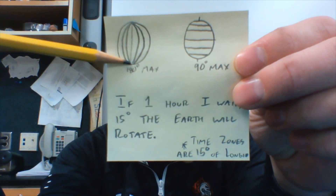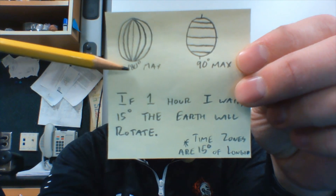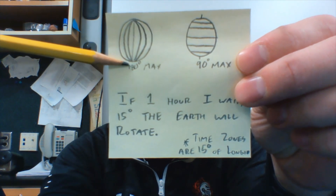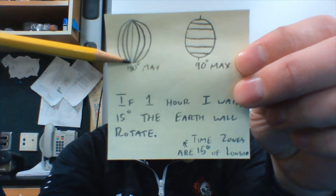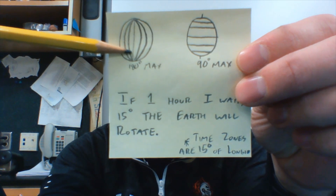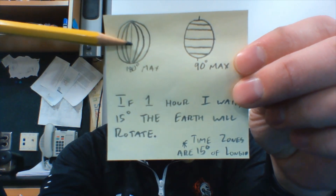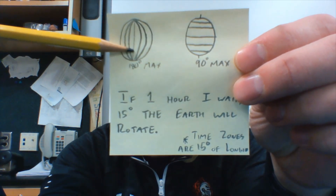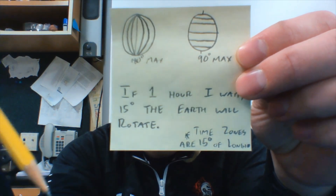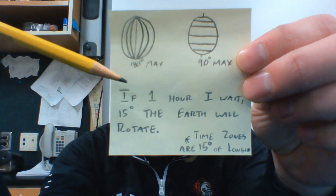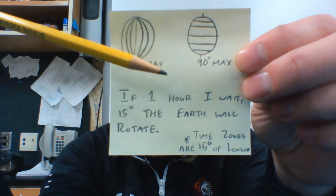Longitude measures east to west, but the lines run north to south, and it's a maximum of 180 degrees — that's at the International Date Line. It runs through Greenwich, England at zero degrees.